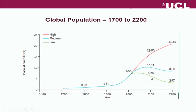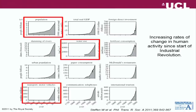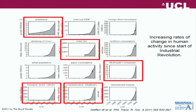That global picture hides a huge amount of regional variation. Virtually all future growth is going to be in developing countries; in developed countries where the transition is completed, the population is stable, leaving aside migration. It's not just the population that's been increasing — this slide shows growth in all kinds of activity since the Industrial Revolution: water use, motor vehicles, telephones, and increasing McDonald's restaurants. The general picture is more people, more complex societies, and more consumption.